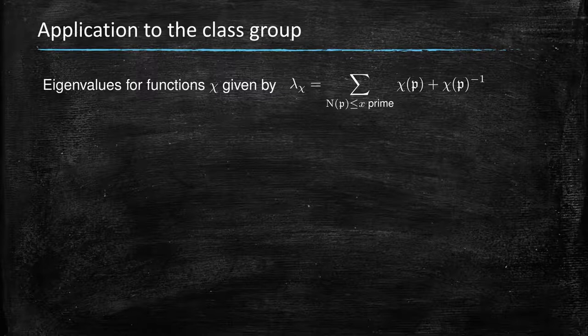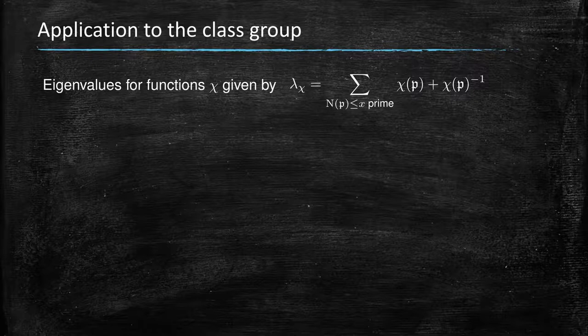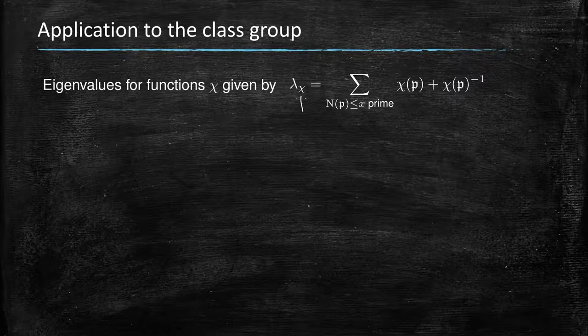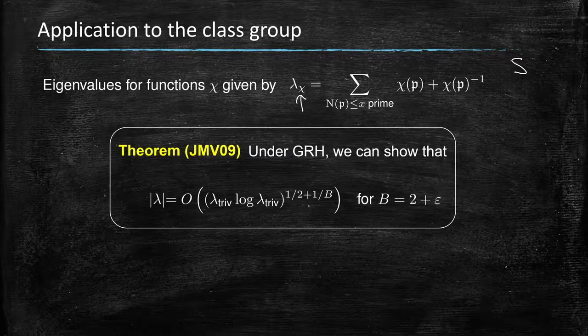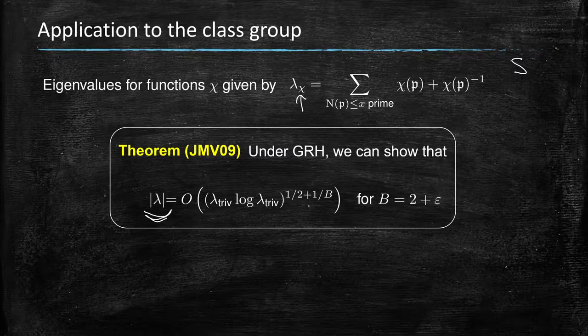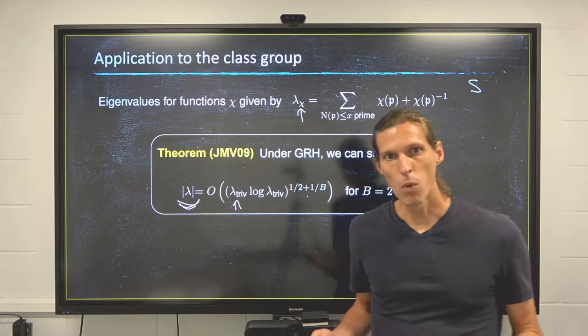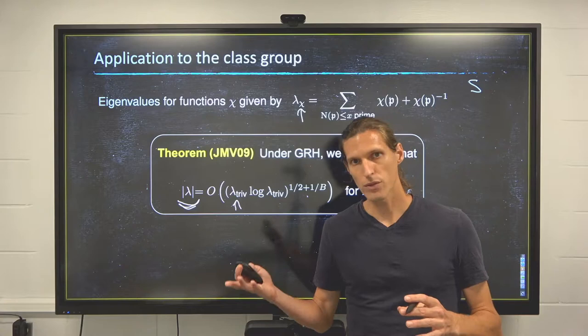Now the question is, is it the case for the class group? The eigenfunctions are essentially characters for any finite group and in particular the class group. The eigenvalues attached to a character is the sum of chi of p plus chi of p inverse because of the shape of S we chose—all the primes and their inverses of norm less than a certain bound. It's proved by Jao, Miller, and Vercauteren that under a generalization of the Riemann hypothesis, all the non-trivial eigenvalues are bounded by essentially a square root of the trivial eigenvalues. That creates a gap, exactly the spectral gap we want.